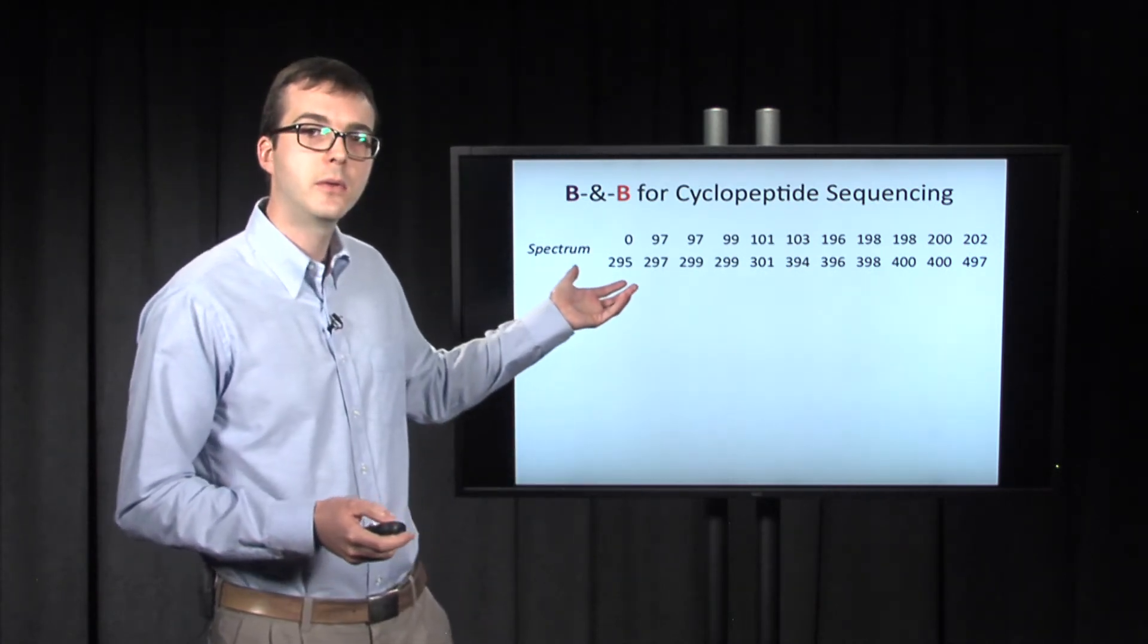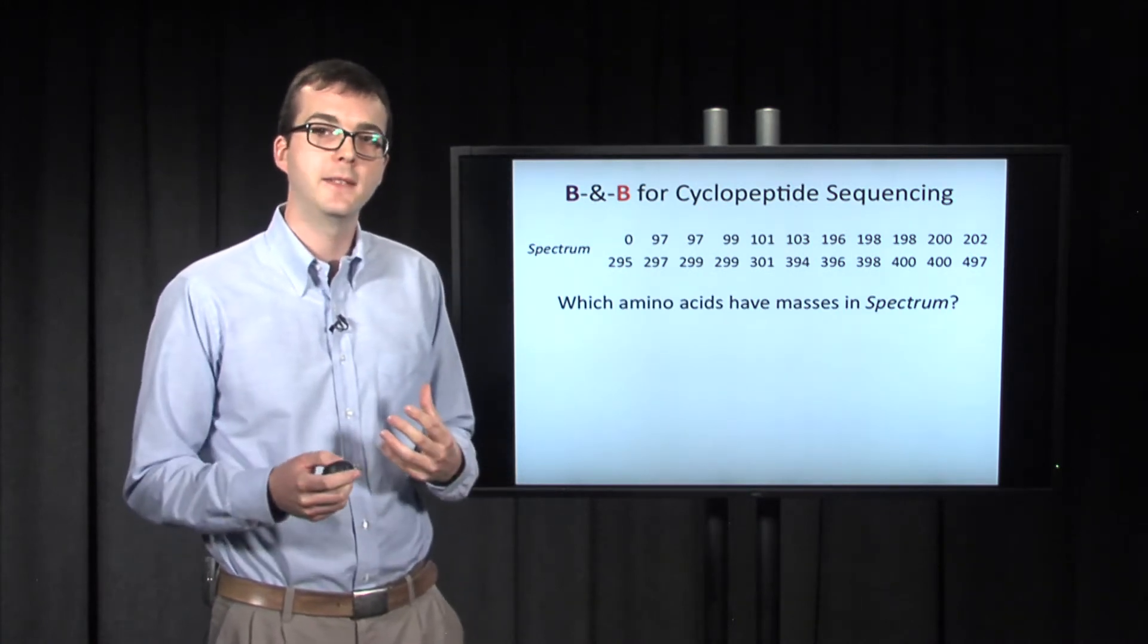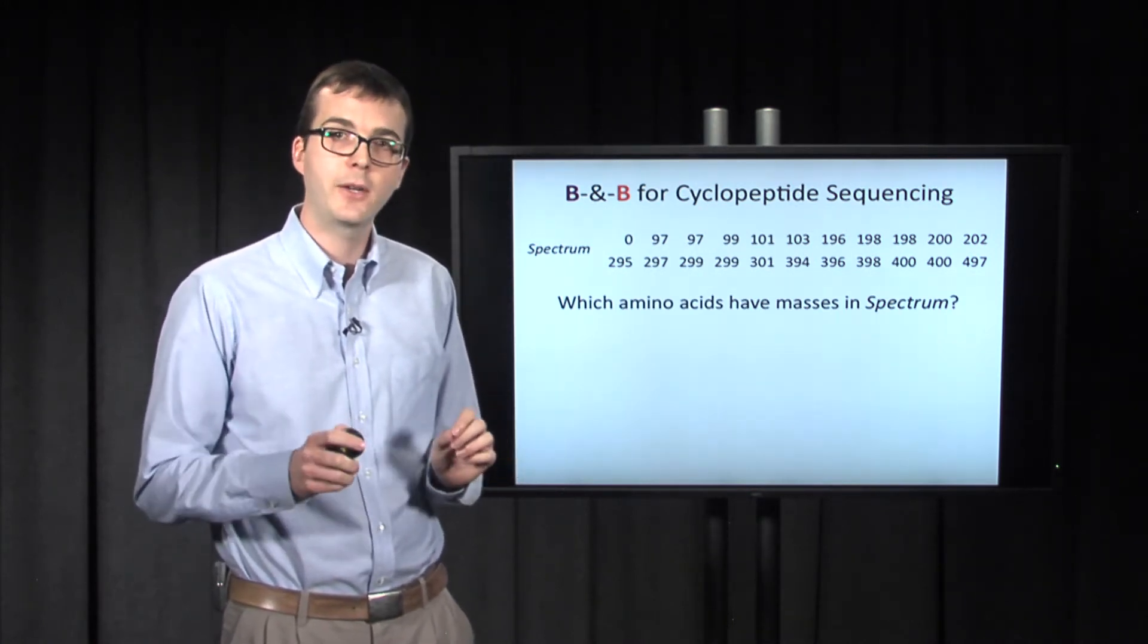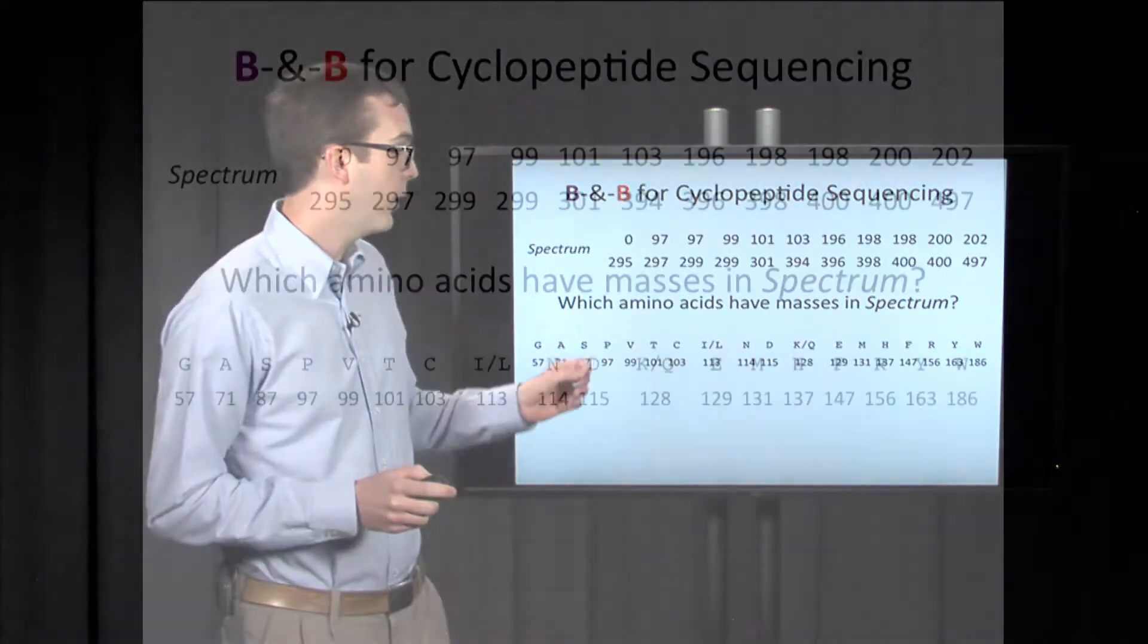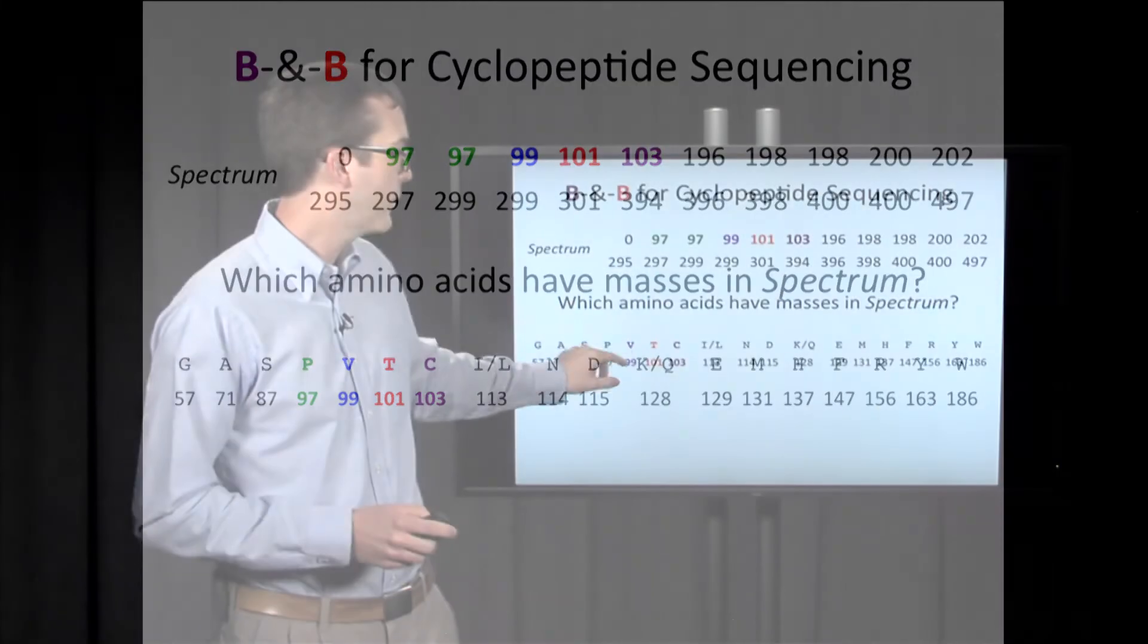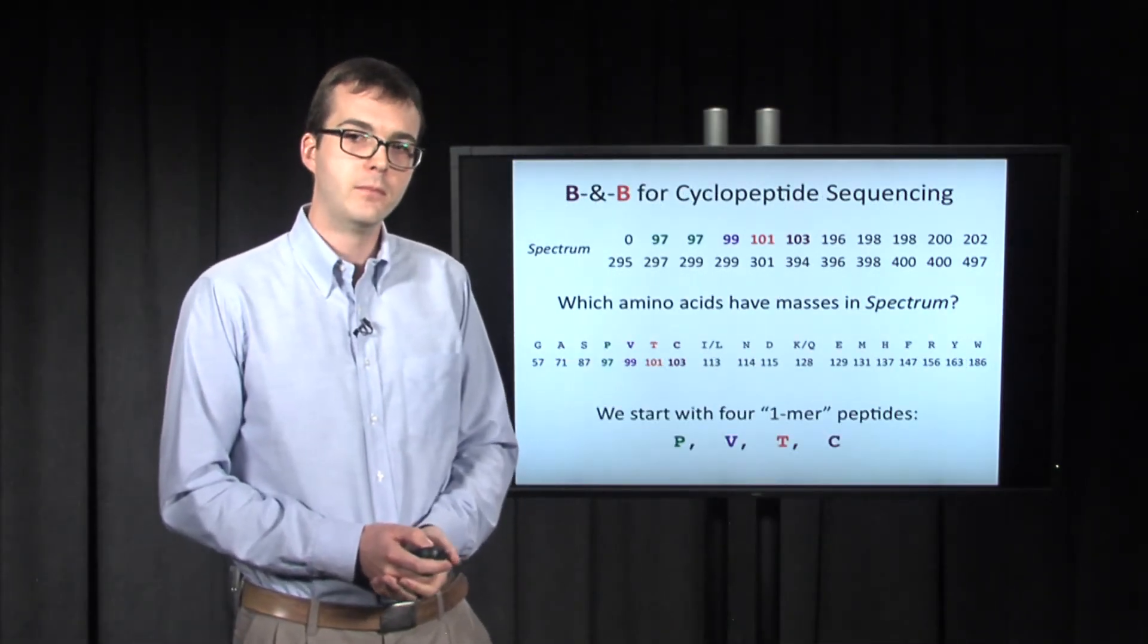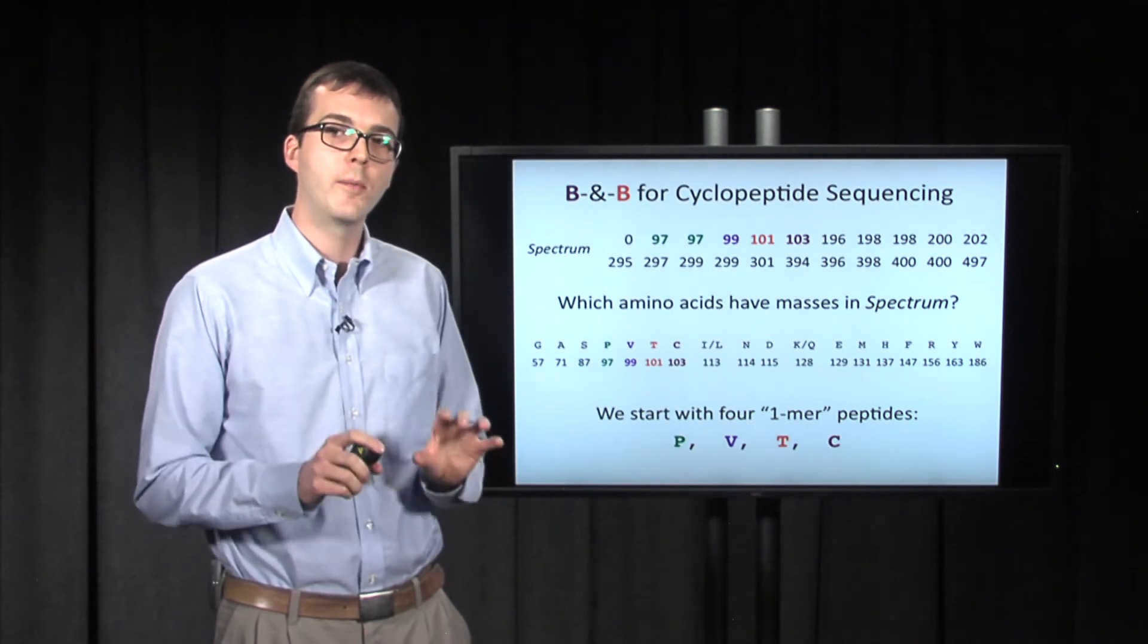All right, so let's apply it to cyclopeptide sequencing then. Here's a possible spectrum. All right, and our first question is, which amino acids have masses in the spectrum? So if we look at, bring back this integer mass table, then we highlight P has mass 97, and it occurs in the spectrum. V has mass 99, it occurs in the spectrum. We also get T and C.